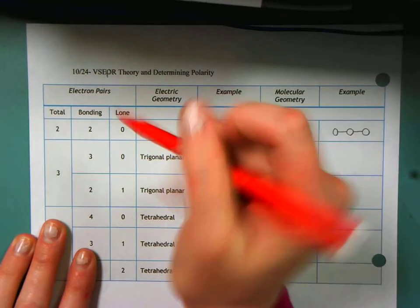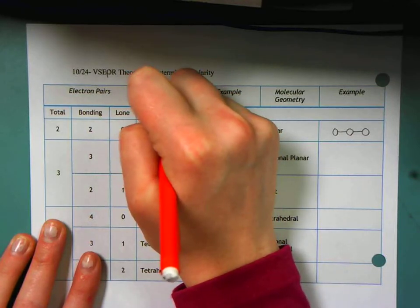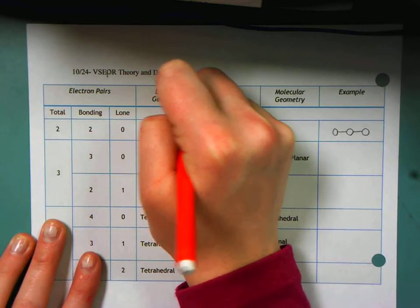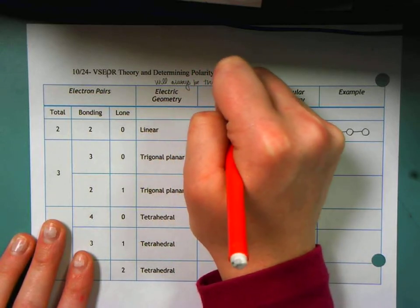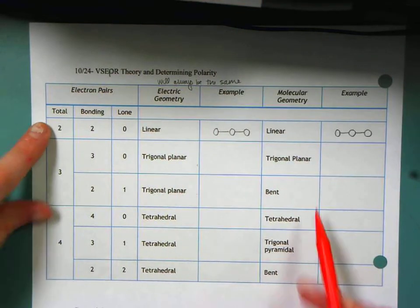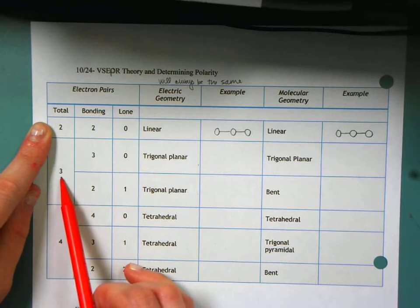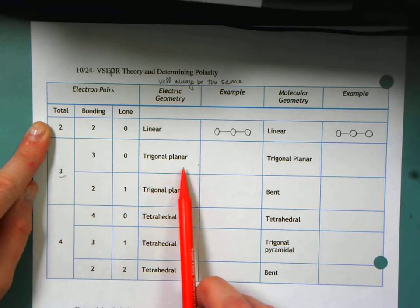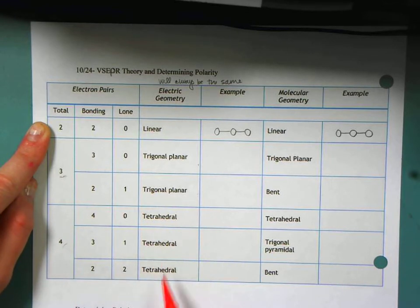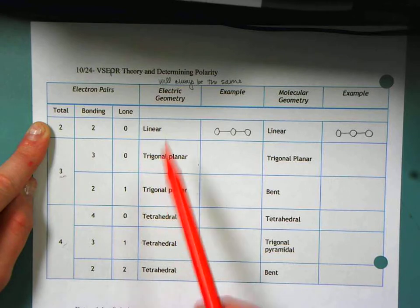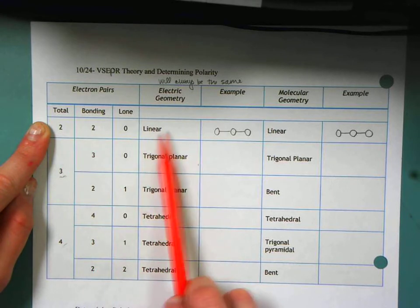So electric geometries, I'm going to tell you right now, will always be the same. So if I just look through here, I see that if I have three bonds being made, I always have trigonal planar. If I have four bonds total being made, I always have tetrahedral. If I have two bonds being made, I'll always have linear.